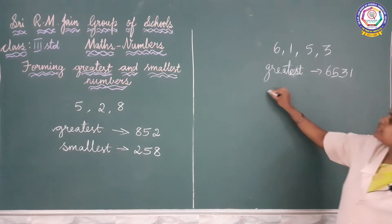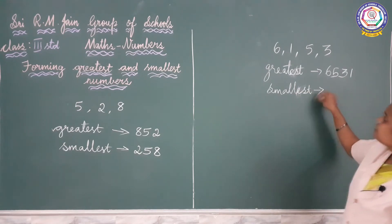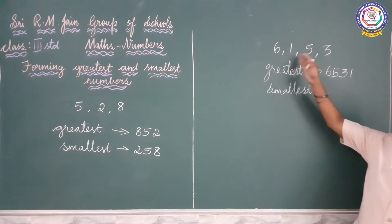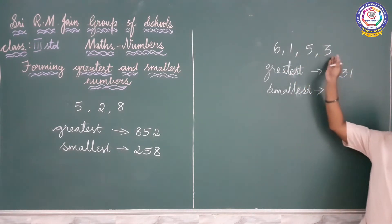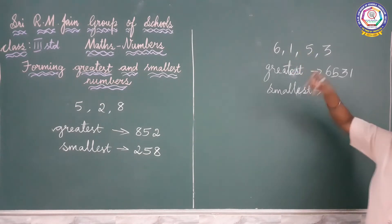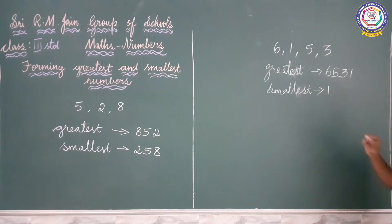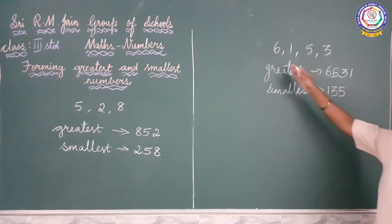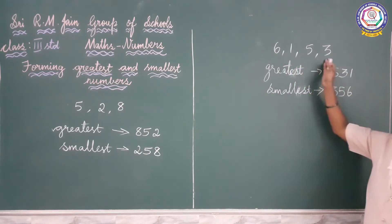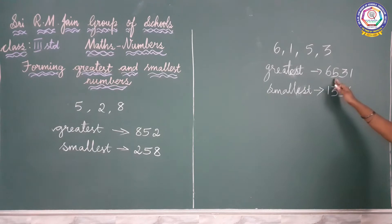Next we are going to find out the smallest 4-digit number using these numbers. Compare the digits and find out the smallest number. Which is the smallest number from 6, 1, 5, 3? 1 is the smallest number. Then next smallest from 6, 5, 3 is 3. Next is 5, then 6. So using these numbers we have formed the greatest 4-digit number 6531 and the smallest 4-digit number 1356.